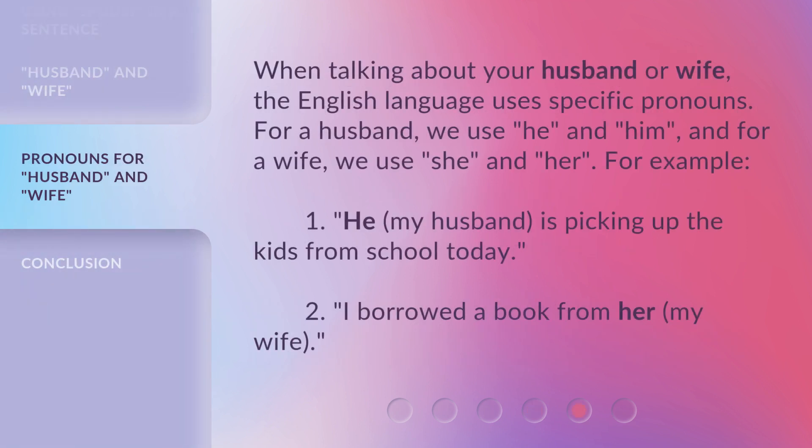When talking about your husband or wife, the English language uses specific pronouns. For a husband, we use 'he' and 'him.' And for a wife, we use 'she' and 'her.' For example: 1. He (my husband) is picking up the kids from school today. 2. I borrowed a book from her (my wife).